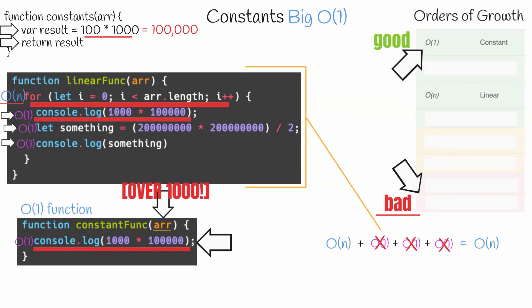Steps that are constant or that are O of one are as good as it gets in terms of efficiency. So we always ignore them, unless the entirety of the function is constant, or O of one. And in that case, we would categorize the entire function as constant, or O of one.